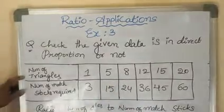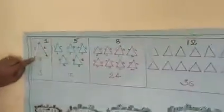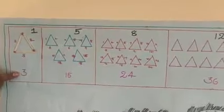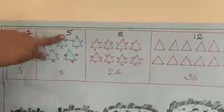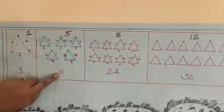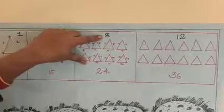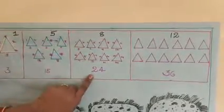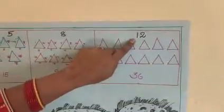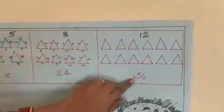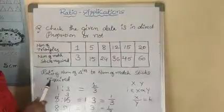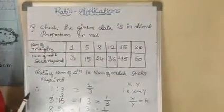If you observe these data on the chart: I prepared one triangle with 3 matchsticks. If I want to prepare 5 triangles, I need 15 matchsticks. If I want to prepare 8 triangles, I need 24 matchsticks. If I want to prepare 12 triangles, I need 36 matchsticks. The given data is in direct proportion.